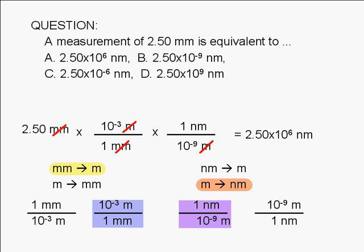Therefore, the correct answer is A. We express our answer to three significant digits because the original measurement, 2.50 millimeters, has three significant figures. All the numbers in the conversion factors are exact and have no uncertainty.